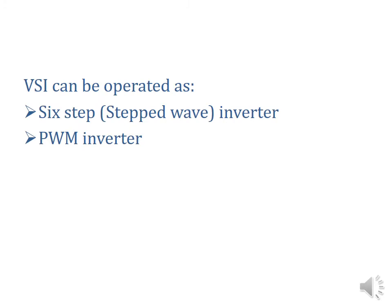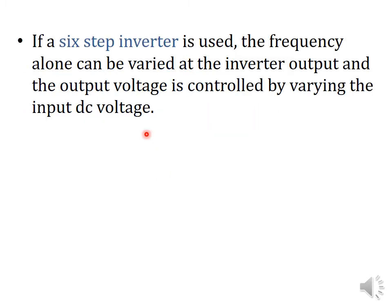Next, let's see how the voltage source inverters are controlled. It can be operated as either a six-step, that is a stepped wave inverter, or a PWM inverter. If a stepped wave inverter is used, then the frequency alone can be varied at the inverter output. That means the six-step inverter is capable of varying the frequency only; it cannot control or vary the magnitude of the output voltage.